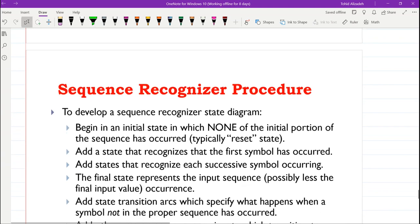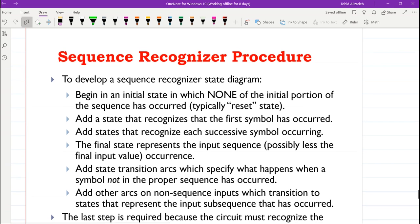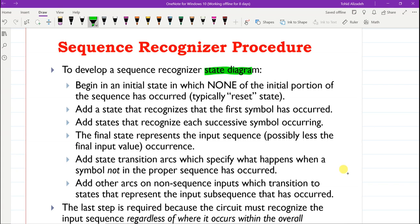Here we have the procedure for the sequence recognizer. In order to develop the state diagram for a sequence recognizer, we will begin in an initial state in which none of the initial portion of the sequence has occurred, and we can call it the reset state. At that state, we assume that none of the sequence has occurred. Then we will add a state which recognizes that the first symbol has occurred.